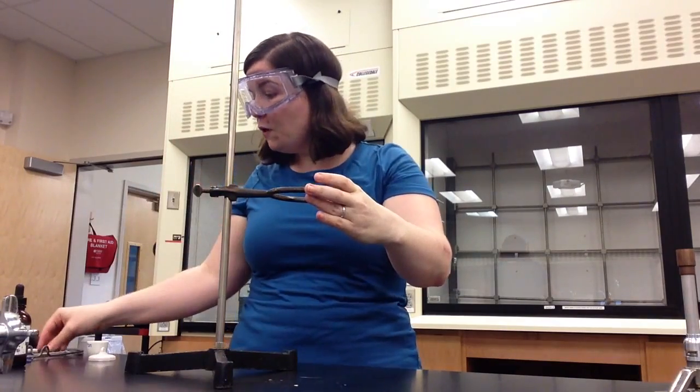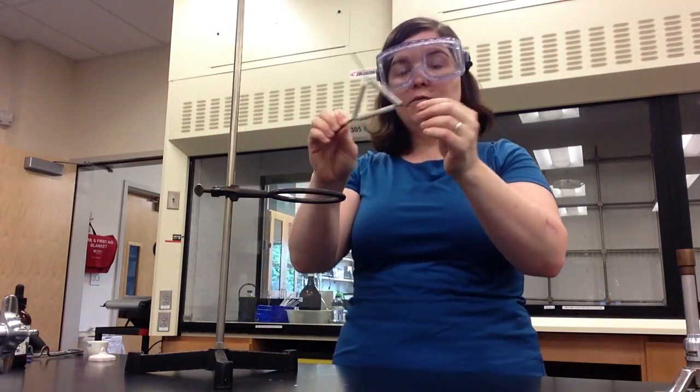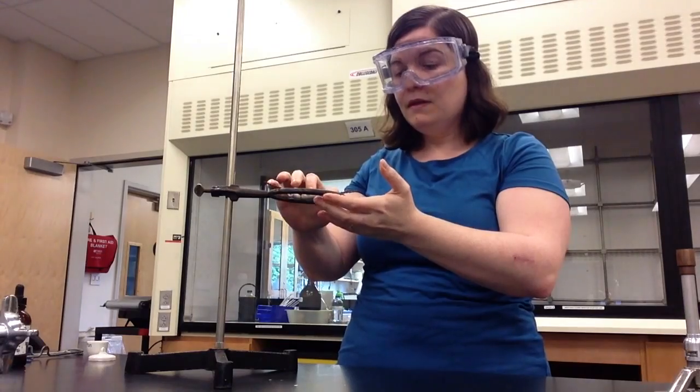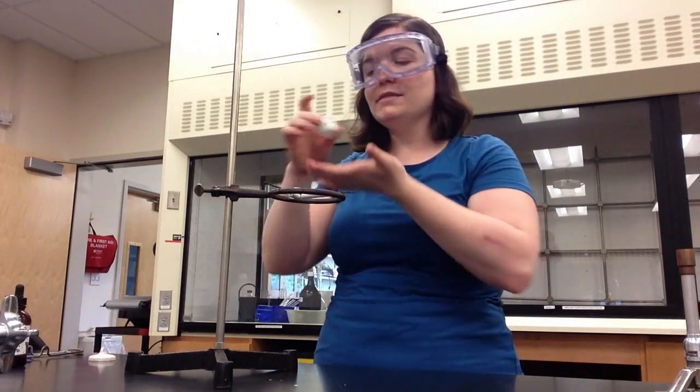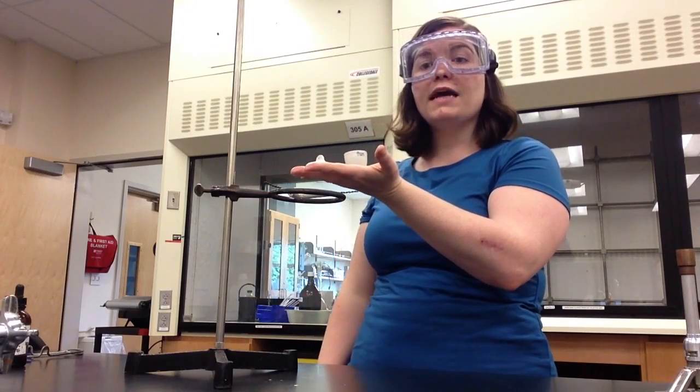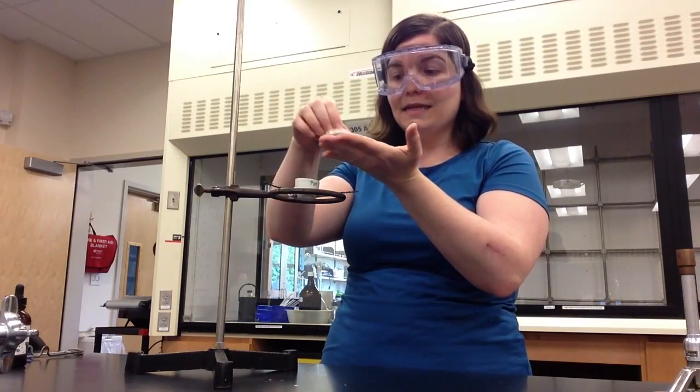And the support ring will hold the clay triangle, which can be found in your box. The clay triangle is just the right size to hold the crucible and the lid. After you add approximately 1.5 grams of potassium chlorate to the crucible, carefully place the crucible and its lid on the clay triangle.